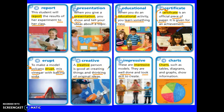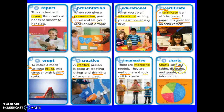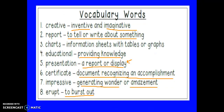'Charts.' Charts, such as tables, diagrams, and graphs, show information. In this example, the text actually gives us examples of what charts are — those are very good context clues. When it says 'charts such as,' the phrase 'such as' signals that examples are coming. So charts could be tables, diagrams, and graphs. The actual definition of 'charts' is information sheets with tables or graphs.